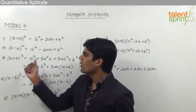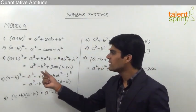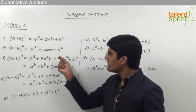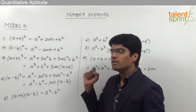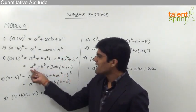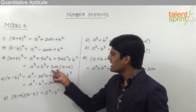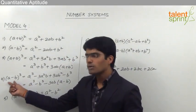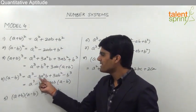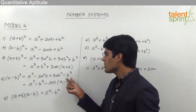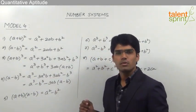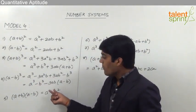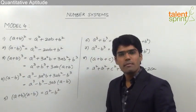Next comes (a + b)³. (a + b)³ = a³ + 3a²b + 3ab² + b³, or this can also be written as a³ + b³ + 3ab(a + b). Likewise, (a - b)³ = a³ - 3a²b + 3ab² - b³, which can also be written as a³ - b³ - 3ab(a - b).